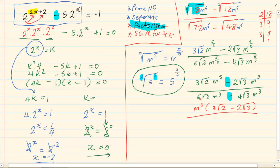At the denominator, we have 2m³ as a common, leaving us with 3√2 minus 2√3.